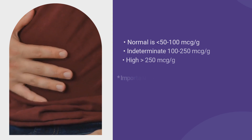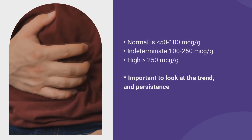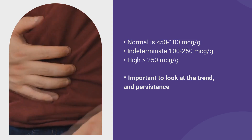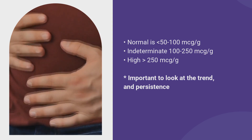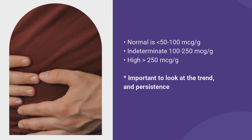What is an abnormal level of fecal calprotectin? This test is measured as a concentration reported in micrograms per gram of stool. A normal fecal calprotectin is less than 50 to 100 micrograms per gram. Between 100 and 250 is the indeterminate zone — it may be relevant but may not be. When it's greater than 250, we're pretty confident there is active intestinal inflammation.